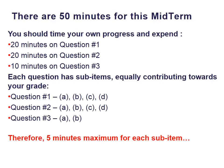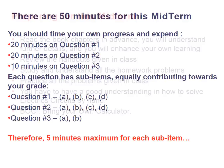You have 50 minutes for this midterm. You should time your own progress: spend 20 minutes on question one, 20 minutes on question two, and 10 minutes on question three. Each question will have sub-items, equally contributing toward your grade. Questions one and two have four items A, B, C, and D. Question three has two items A and B, giving ten sub-items total. Take five minutes maximum for each sub-item.